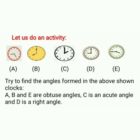Let us find out what angles are formed in these clocks according to their measures. In clock A, the angle formed is more than 90 degrees and less than 180 degrees, so it is an obtuse angle. In clock B, the angle is again more than 90 degrees and less than 180 degrees, so it is also an obtuse angle. In clock C, the angle shown is less than 90 degrees, so it is an acute angle. In clock D, it is 90 degrees — L shaped — so it is a right angle. In clock E, the angle formed is more than 90 degrees and less than 180 degrees, so it is also an obtuse angle.